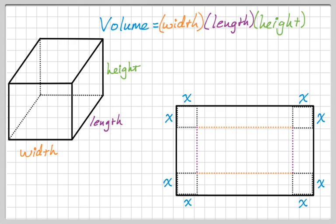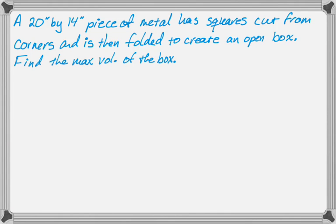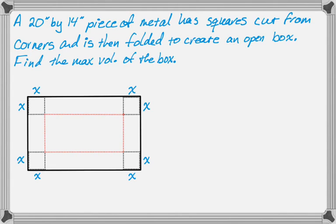So let's look at the typical problem. So a typical problem would say a 20 by 14 inch piece of metal, or rectangular piece of metal, has squares cut from the corners and is then folded to create an open box. We want to find the maximum volume of this box. So I'm going to start by kind of drawing the rectangular piece of metal. So there we go. And we have our x's cut out. So it's the same picture pretty much every time, so you want to definitely get used to drawing it.